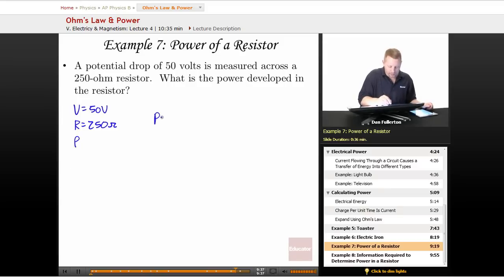Well, this time I'm going to use power equals V squared over R. So that'll be 50 volts squared divided by 250 ohms or 10 watts. Another version of our power formula.